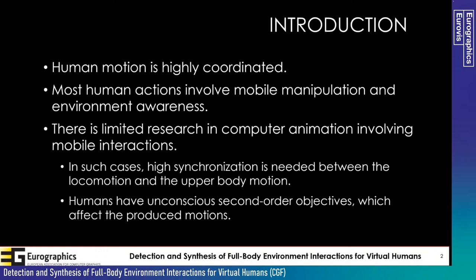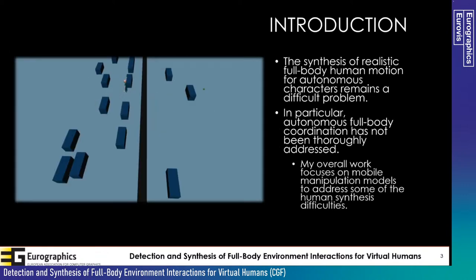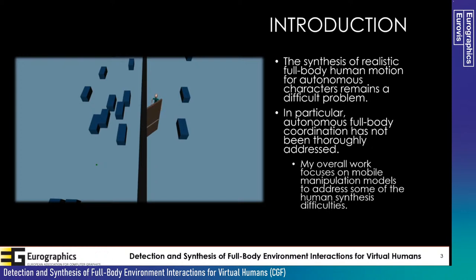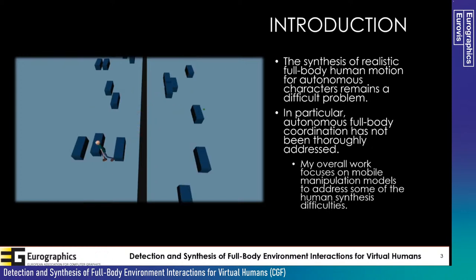If you're going to grab something out of reach, you don't stop at the precise distance your hand could reach — you go to a comfortable position and start the reaching action before the goal is achieved. The common approach is to reach a location and play a specific animation that achieves the task, but this ends up looking dull and repetitive. Actions like this show that human movement contains high synchronization of the whole body, particularly when moving while achieving an extra task — a second-order objective done unconsciously.